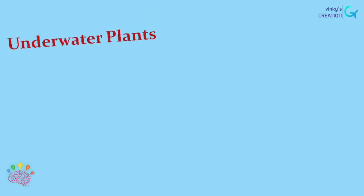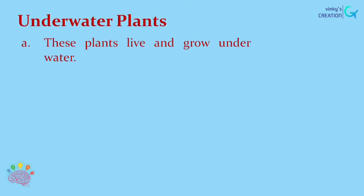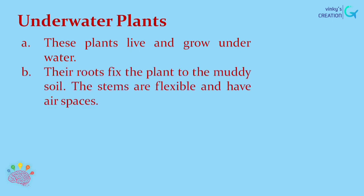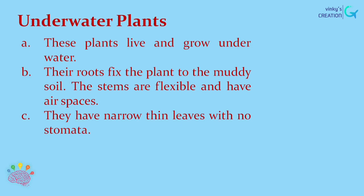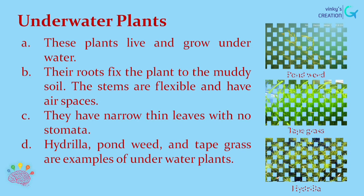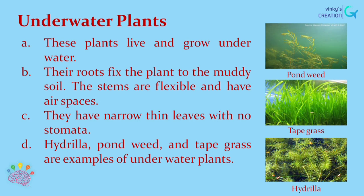Lotus and Water Lily are examples of fixed aquatic plants. Underwater plants live and grow underwater. Their roots fix the plant to the muddy soil. The stems are flexible and have air spaces. They have narrow, thin leaves with no stomata. Hydrilla, pondweed and tape grass are examples of underwater plants.